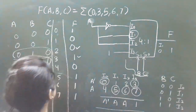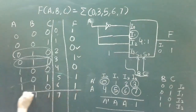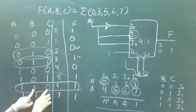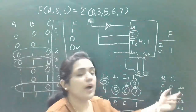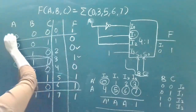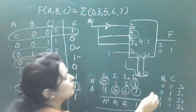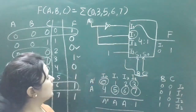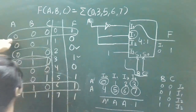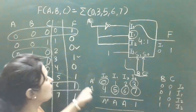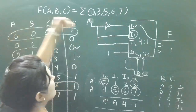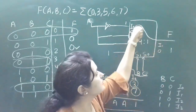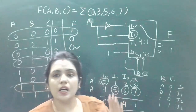So the connections for this case: A-complement to I0, A to I1, A to I2, and 1 to I3. We can verify: suppose BC = 00, so I0 is selected, which is connected to A-complement. Value of A = 0 in this case, so A-complement = 1 — output is 1. This matches minterm 0 being in the function. We can verify other inputs similarly.